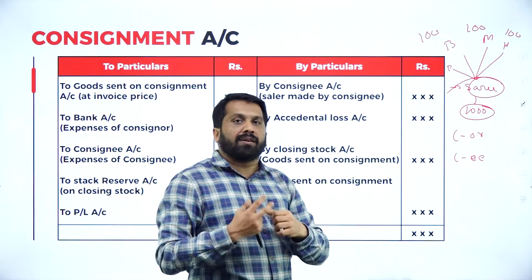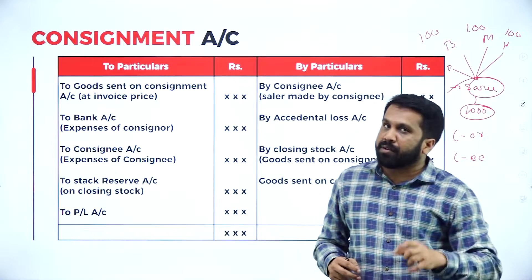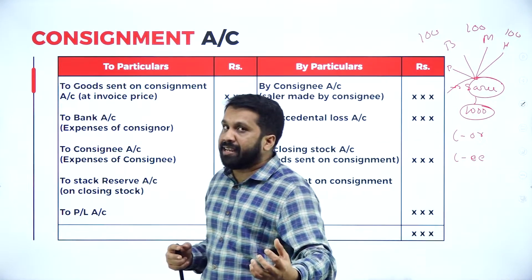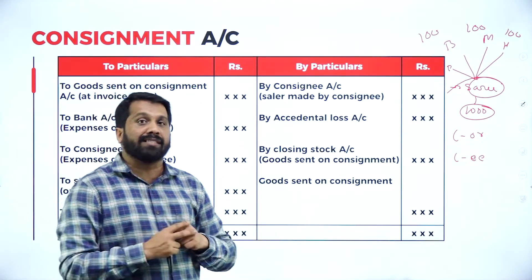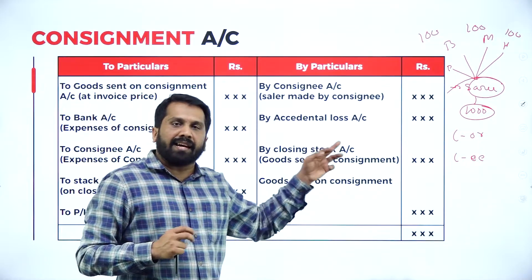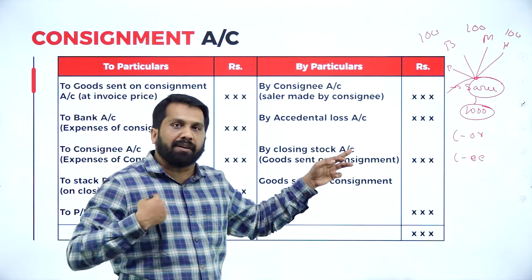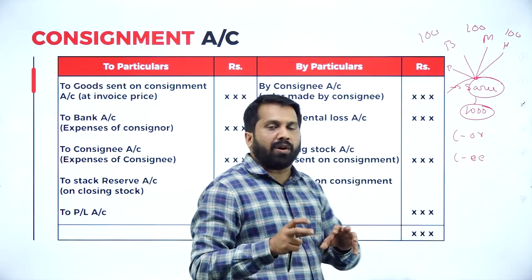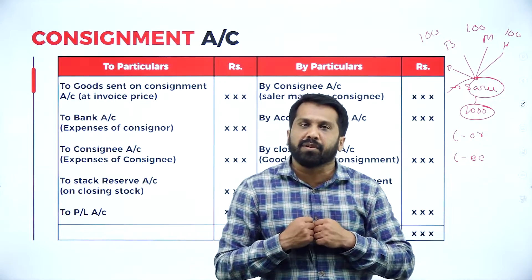The consignment means it is an agreement between two or more persons — between consignor and consignee. Who is the consignor? Owner. Who is the consignee? Agent. The agreement is that the agent has to sell the product at the price given by the owner, and once sold, whatever amount he collected, he has to return it back.